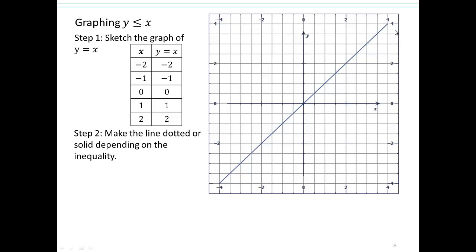The second part is to determine if the points on the line itself are solutions or not. Since we can have y equals x, because it's y less than or equal to x, all the points on this line are part of the solutions because equality is allowed. If they are, you keep it solid line. If they are not part of solution, you draw a dotted curve or dotted line. We're keeping it solid line because you can have y equals x.